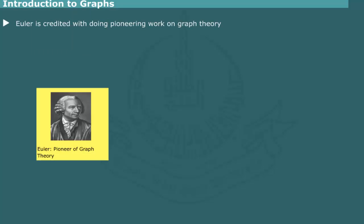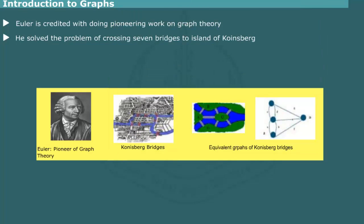Famous mathematician Euler is credited with doing pioneering work on graph theory. Using a graph representation, he was able to solve the celebrated problem of crossing seven bridges to the island of Königsberg without using any one of the paths more than once.